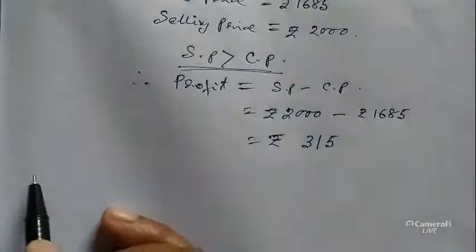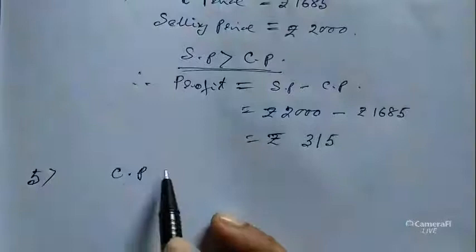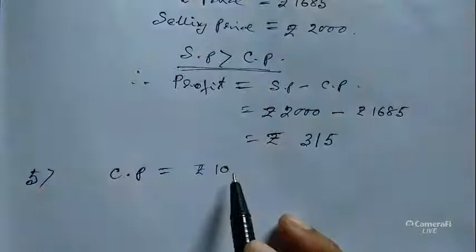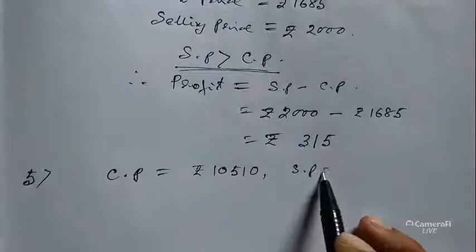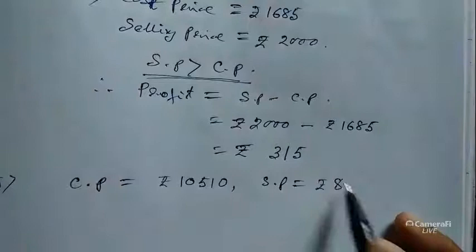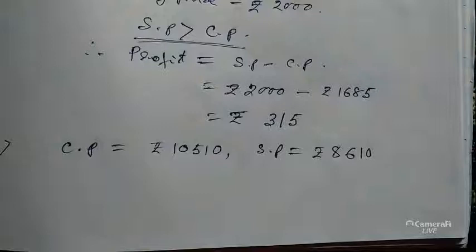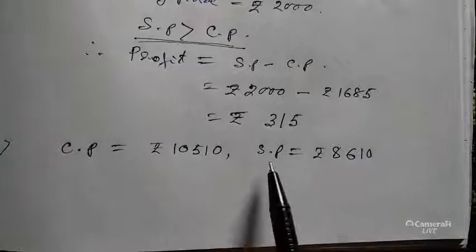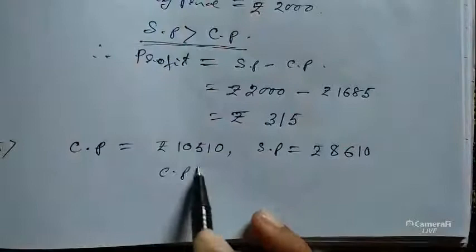Now taking problem number 5. Cost price CP is given as rupees 10,510 and selling price SP is given as rupees 8,610. Check which one is larger: CP is 10,510 and SP is 8,610, so CP is greater than SP — in that case there is a loss.